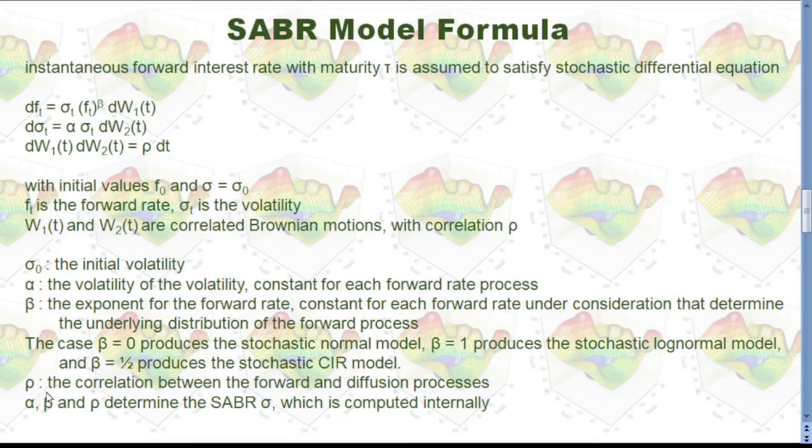This rho, I just mentioned, is correlation between the forward and the diffusion processes. Alpha, beta, and rho together can determine the SABR sigma, which is computed internally.